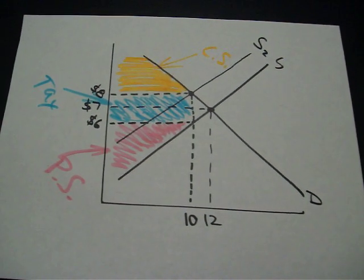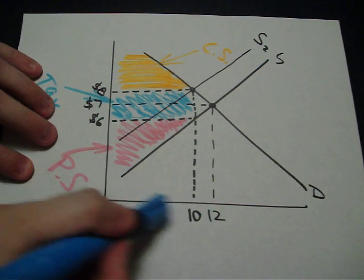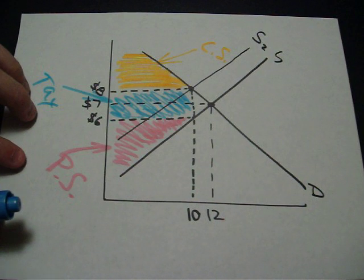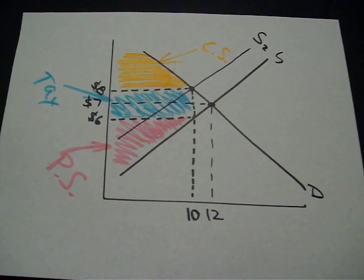it would just be the base times the height. So the base clearly is 10. The height between 6 and 8 is 2, so the government's collected $20 in terms of a tax.